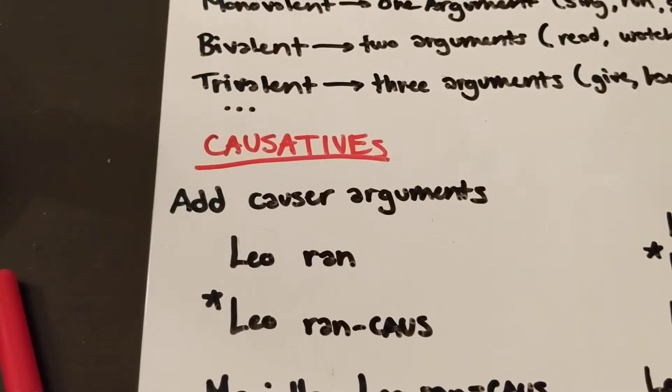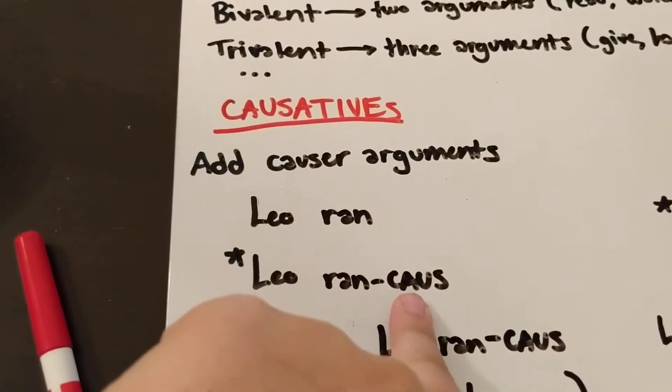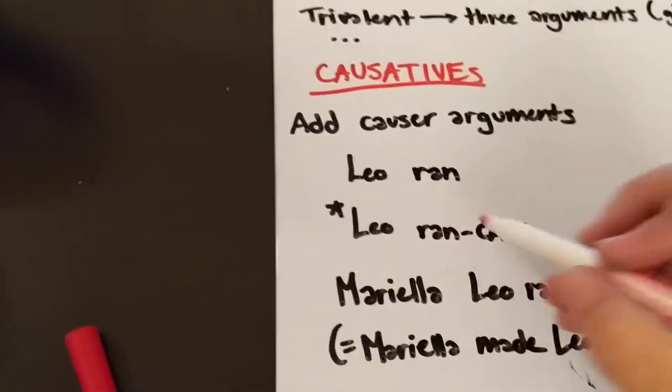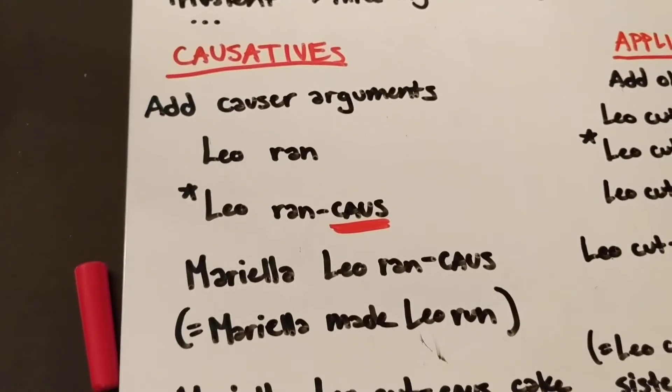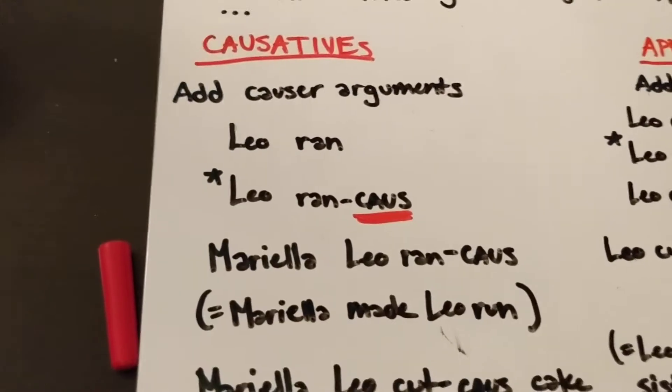So for example, if we start out with the sentence Leo ran, and then we add some sort of causative suffix onto it, which is this lovely little causative here which I will highlight for you. This lovely little causative suffix on it now saying Leo ran causative is ungrammatical because it needs another argument.